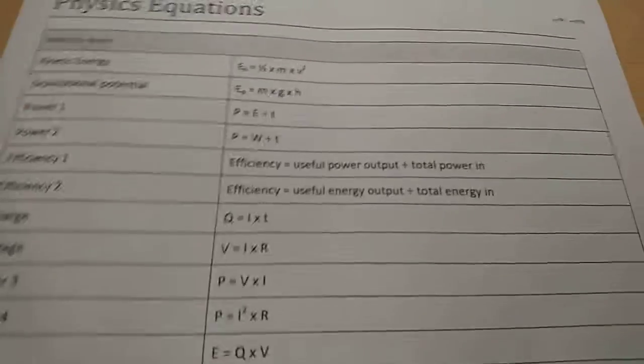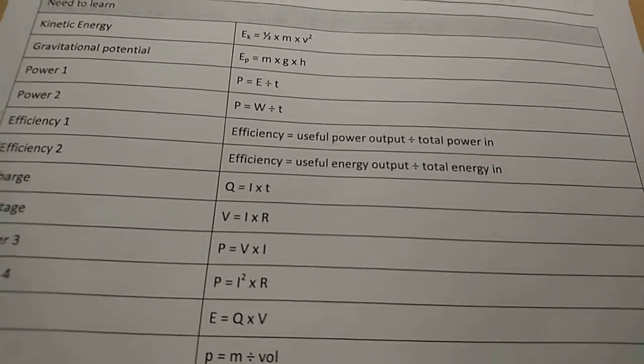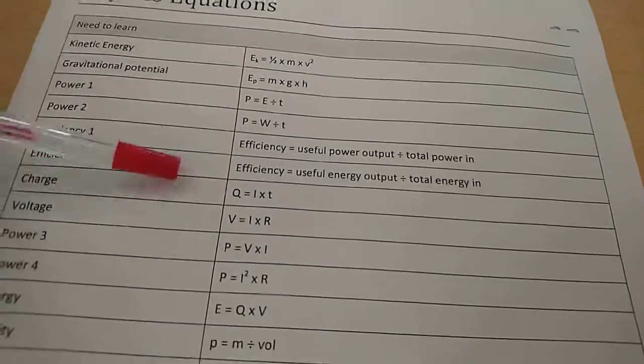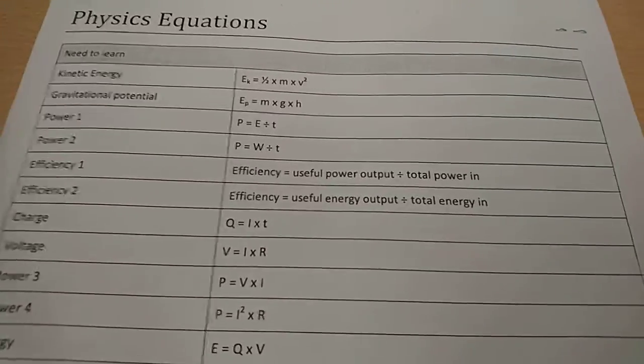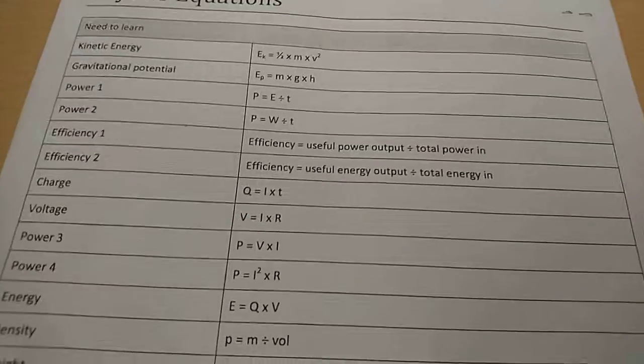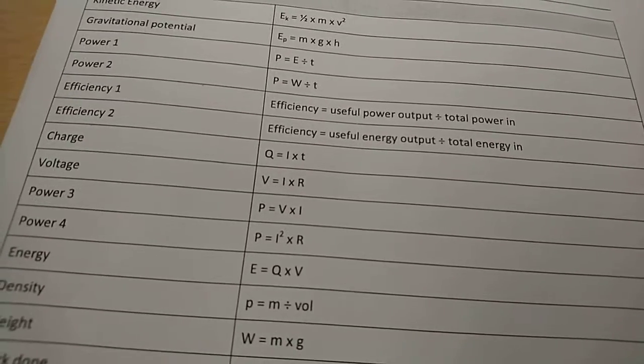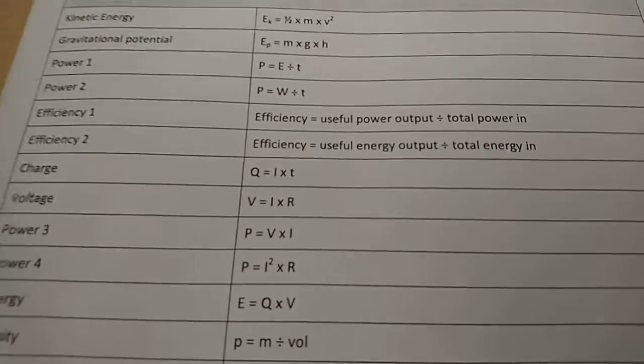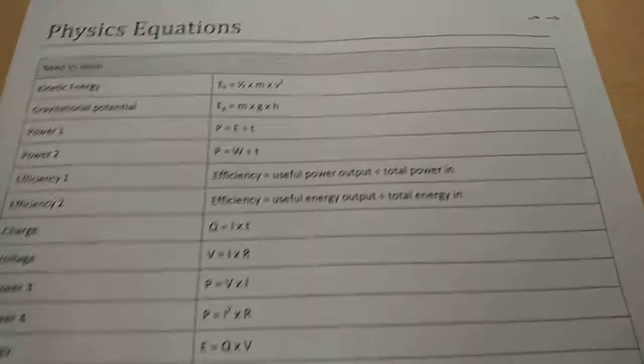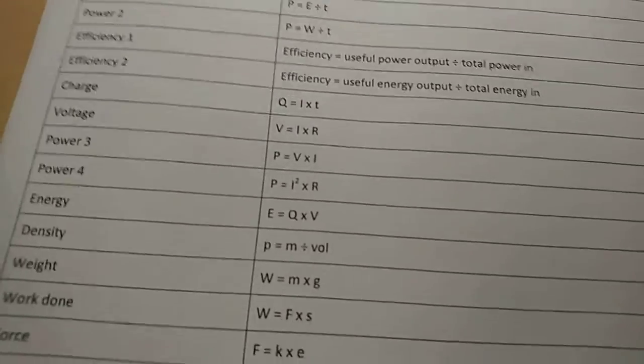So charge here, which is going back to the charge, current and thingy stuff. Q equals I times T. In this, Q is talking about the charge in coulombs. I is talking about the current in amps. And T is talking about the time in seconds. So that's how you can figure out the charge. But always remember you can rearrange them to figure out other things.